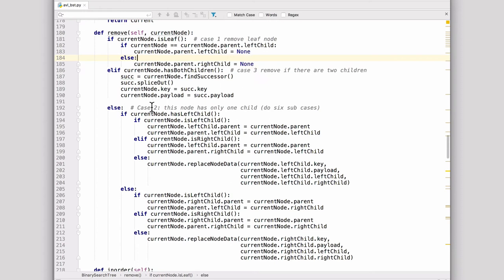Then we covered case two where you have one child but you have all the options of it being a left or right child. And whether you're a left and right child so there were six sub cases. So here's all the code for doing that.